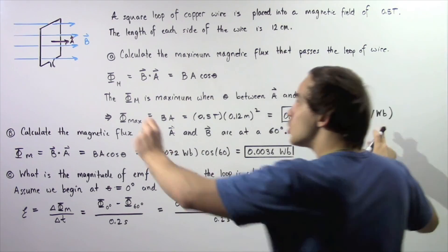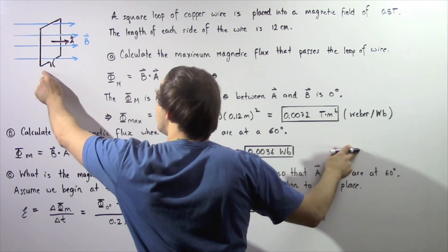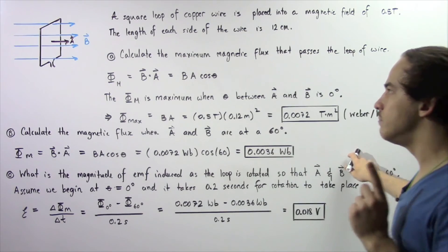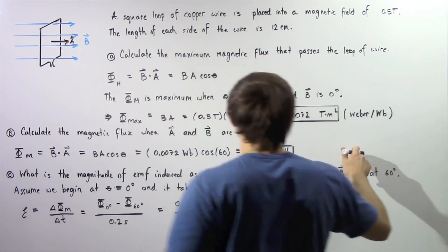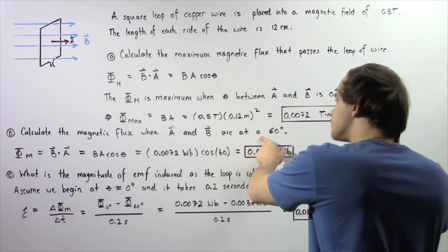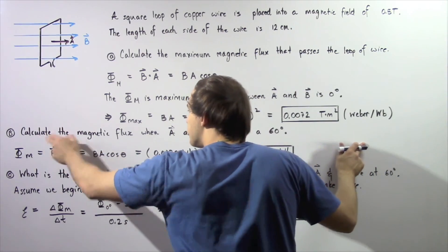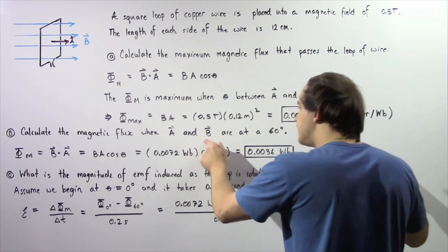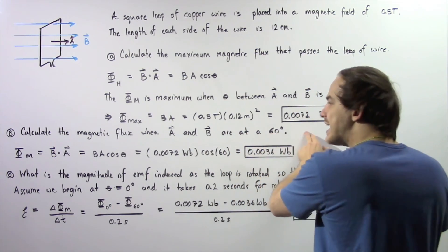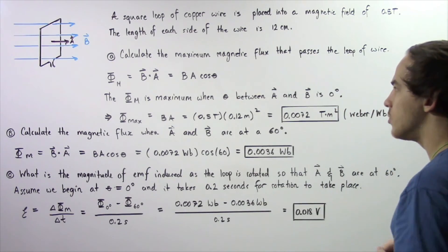Now suppose we rotate our loop of wire so that now the angle between our magnetic field B and our area vector is 60 degrees. So calculate the magnetic flux when the area vector and our magnetic field vector are at a 60 degree angle with respect to one another.